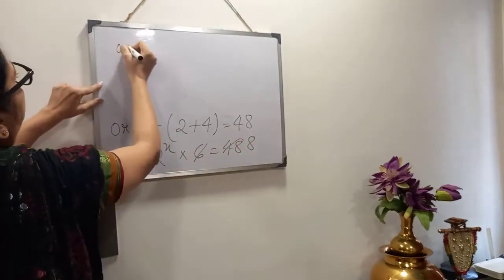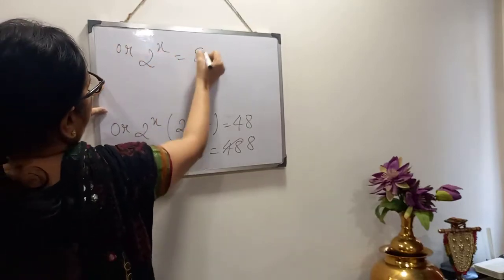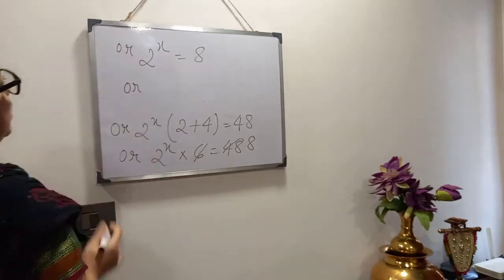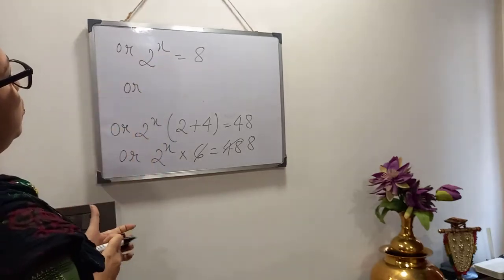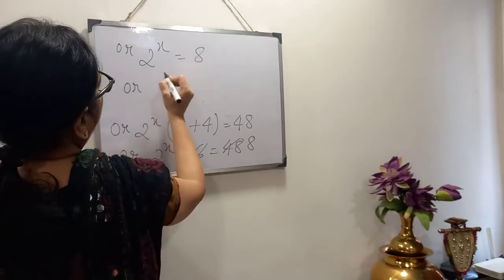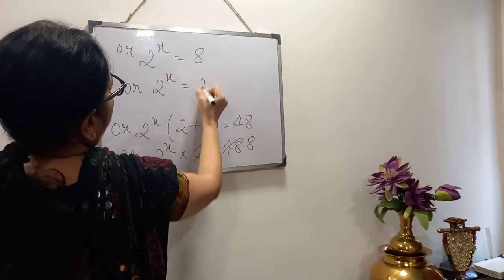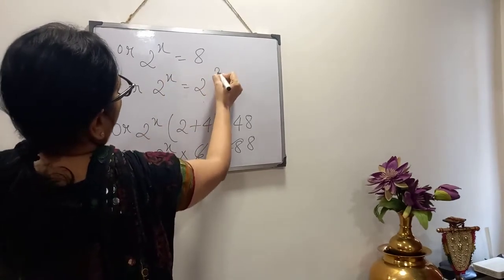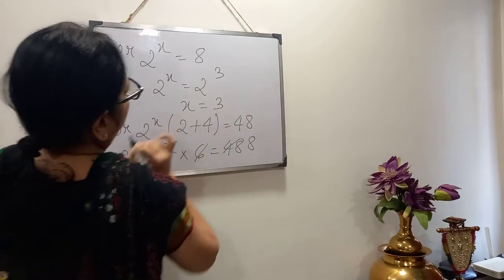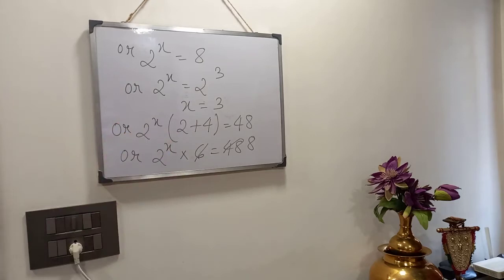After cancelling 6, we get 2 to the power x equals 8. The left hand side base is 2, so 8 must be expressed in terms of 2: 8 means 2 cubed. Again base is the same on both sides, therefore power will be equal, so the solution is x equals 3.